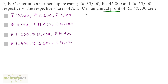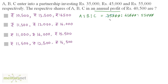So the ratio of their profits A is to B is to C equals 35,000 is to 45,000 is to 55,000. Cancelling the zeros: 5 times 7 is 35, 5 times 9 is 45, and 5 times 11 is 55. So the ratio is 7 is to 9 is to 11. The total parts are 7 plus 9 plus 11, which equals 27.